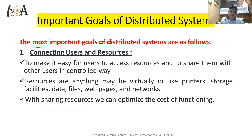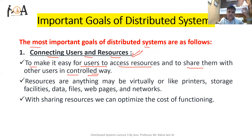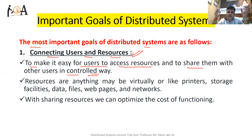The first important goal of distributed systems is connecting users and resources. The goal is to make it easy for users to access resources and to share them with other users in a controlled way. Our goal should be that resources placed at various geographical locations can be shared in a manner that is easy for users — the user interface should be easy and resources can be controlled in a very easy manner.